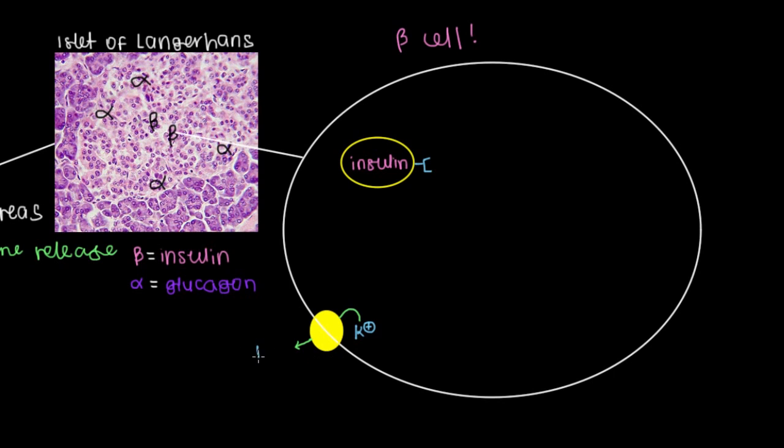Which means that at rest, there's a lot more potassium ions living outside of the beta cell than there are inside of the beta cell. And that's an important distinction because that's how we prevent the beta cell from being depolarized.